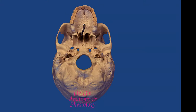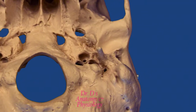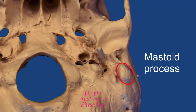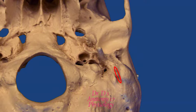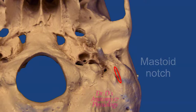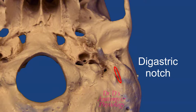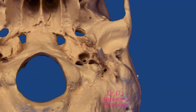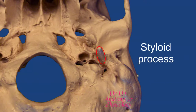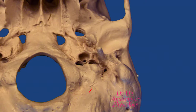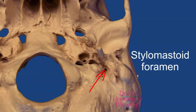Here is an inferior view of the articulated skull to look at the inferior surface of our pyramid. First, let's look at the mastoid process, part of the mastoid portion of the petromastoid part of the bone. Medial to the mastoid process there is a notch or groove referred to as the mastoid notch, also known as the digastric notch, because it is the attachment site for the digastric muscle. Between the mastoid process and the styloid process there is a foramen called the stylomastoid foramen, an important foramen that permits passage of the seventh cranial nerve — the facial nerve.